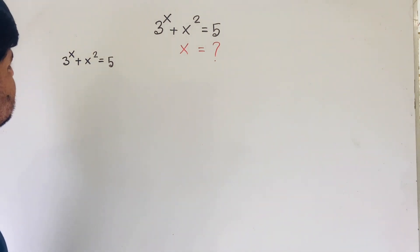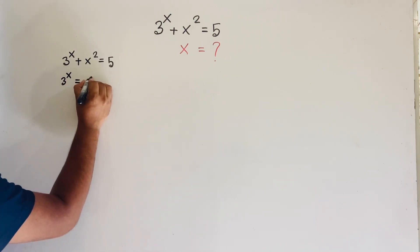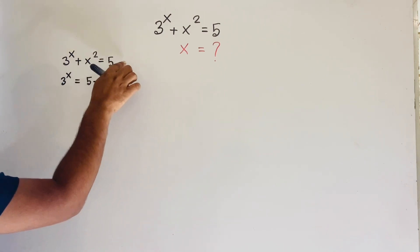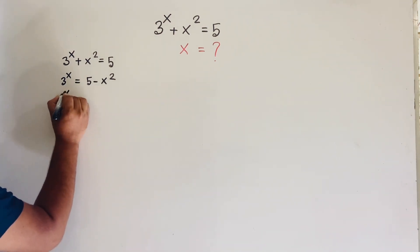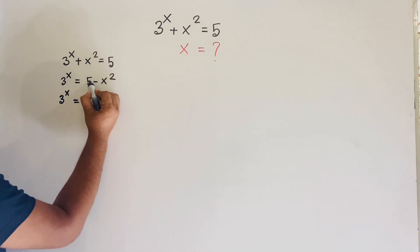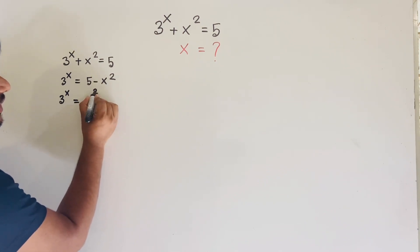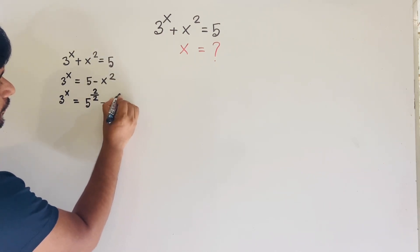This equation becomes 3^x = 5 - x², by moving x² to the right side where it becomes negative. Now I can rewrite 5 — since the exponent is 1, I can express it as 5^(2/2), which equals 5^1, giving us 3^x = 5^(2/2) - x².